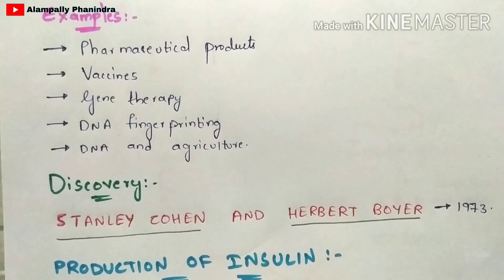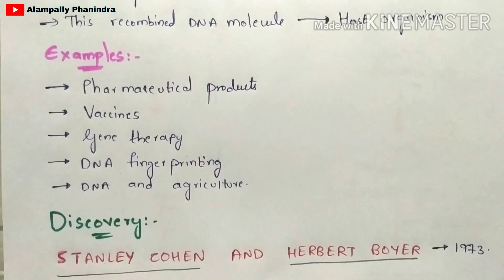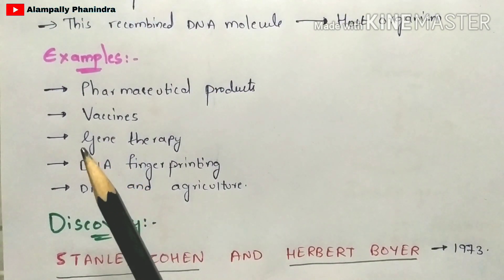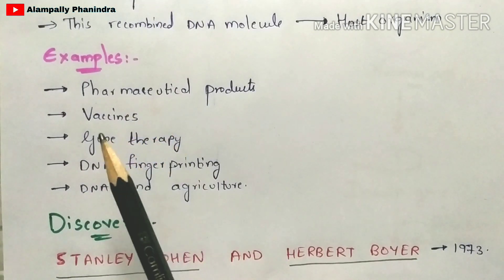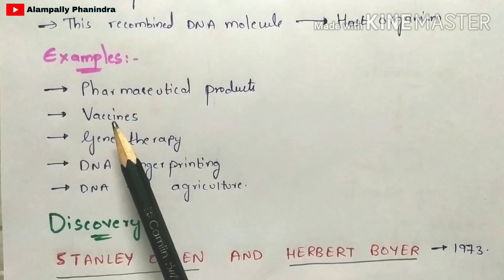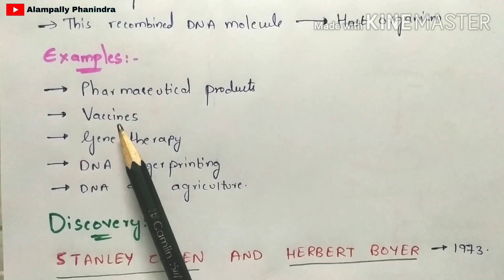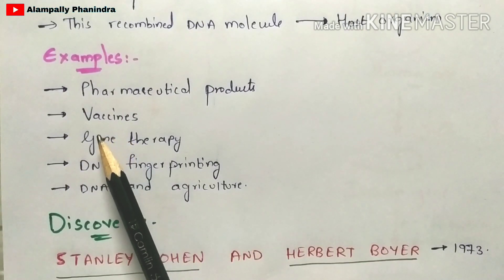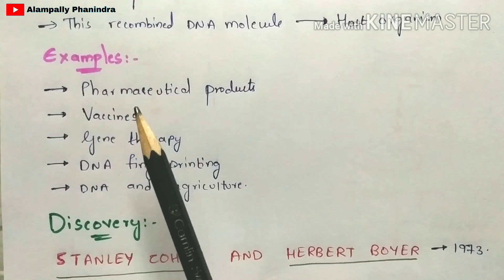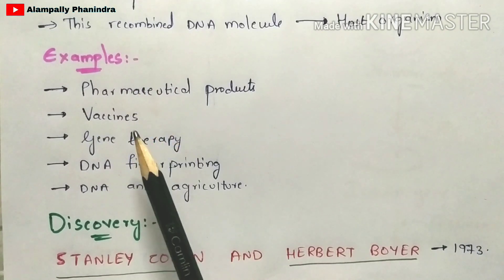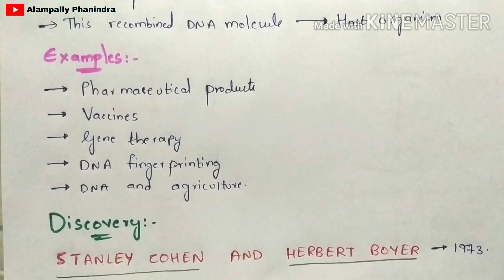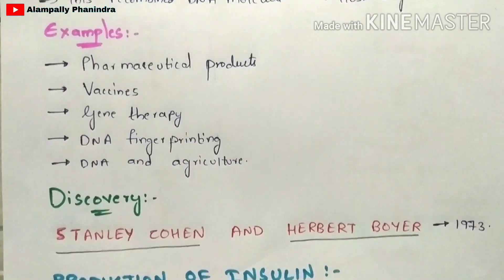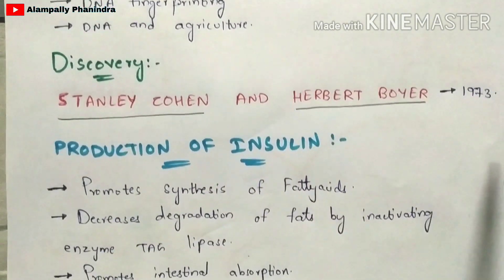Now I'm going to take one of the best examples — the preparation of vaccines — to illustrate rDNA technology. Let us see how vaccines, specifically insulin, will be prepared using rDNA technology. Before entering into the preparation of insulin by rDNA technology, we first need to know the basic facts about insulin and its main function.